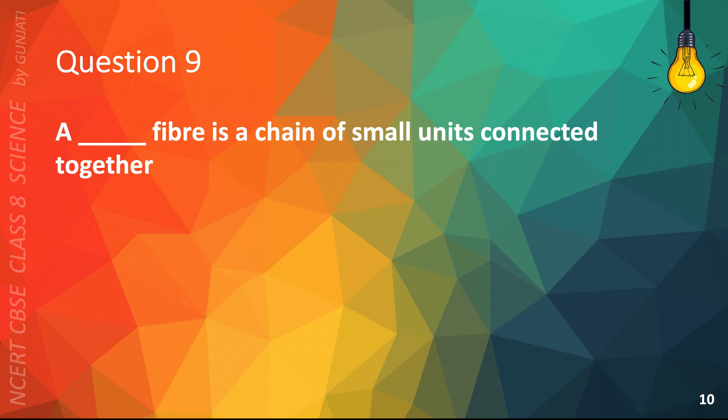Question 9. A blank fiber is a chain of small units connected together. A. Synthetic, B. Natural, C. Oxygen, or D. Artificial. The correct answer is A. Synthetic.